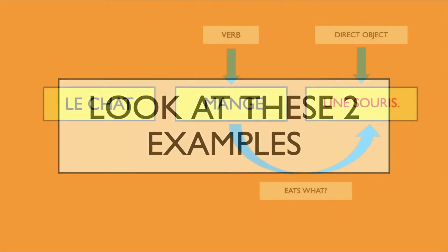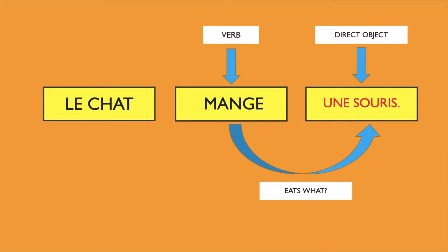Let's look at these two examples. 'Le chat mange une souris' — the cat eats a mouse. 'Une souris,' a mouse, is the direct object because it receives the action of 'mange,' eats, the verb. You think of: the cat eats what? Une souris. Une souris is the direct object.